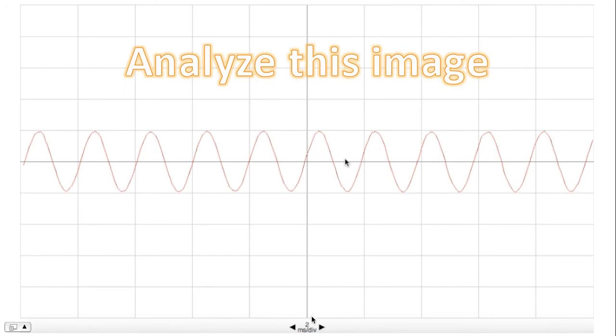As it says here, 2 milliseconds per division. Divide the 2, and let's see what you get for frequency.